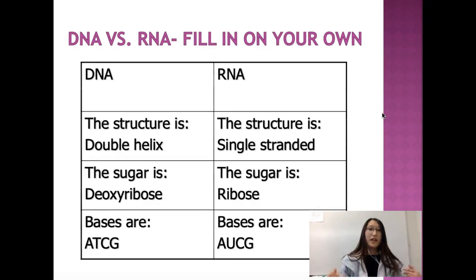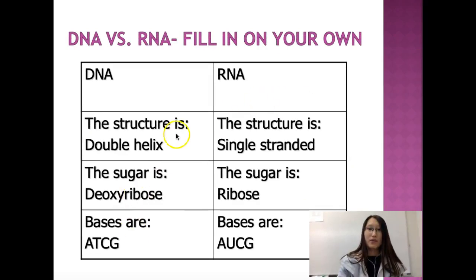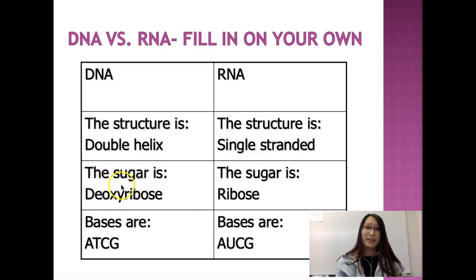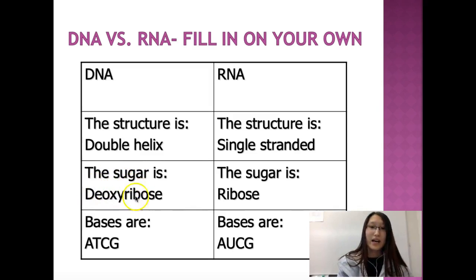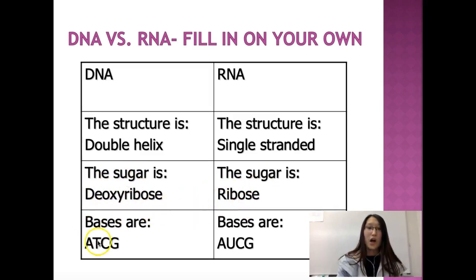Here's the comparison chart between DNA and RNA. DNA is double helix; RNA is single stranded — you wouldn't call it a helix anymore. DNA has deoxyribose as its sugar; RNA has ribose. DNA has A, T, C, G; RNA has A, U, C, G.